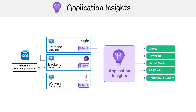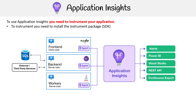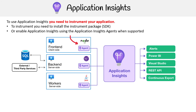Here's an example of an application with a front end, back end, and workers, to represent how you can instrument your applications. When we say instrument, it just means installing a piece of code that runs on it to send data back to Application Insights. You install the instrumentation package SDK, or in some cases you can just turn it on — press a button — and it will install within Azure services.